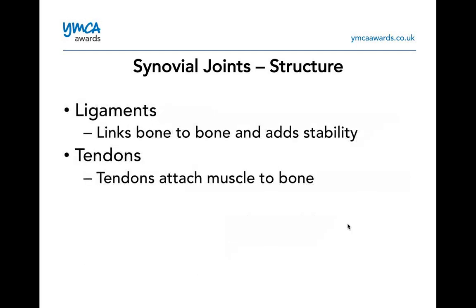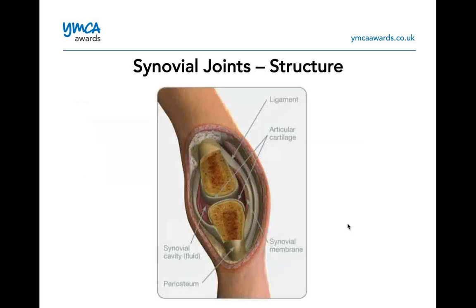We have ligaments and tendons. Ligaments attach bone to bone, while tendons attach muscles to bones. Looking at the synovial joint structure diagram: you can see your ligament, your articular cartilage, the synovial cavity where the fluid comes into and goes around the joint, the outer bone with the periosteum, and then the synovial membrane — the red layer that goes all the way around.